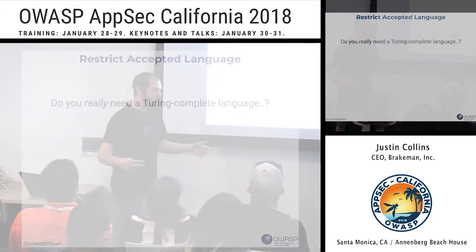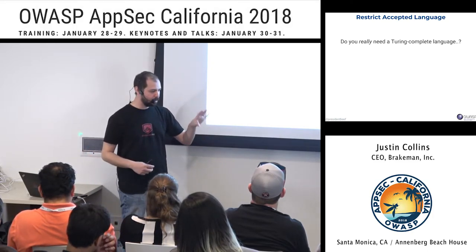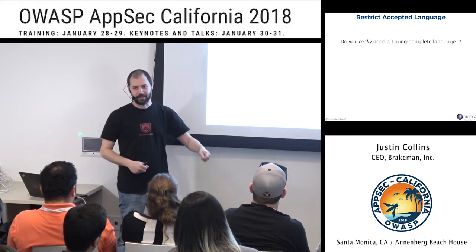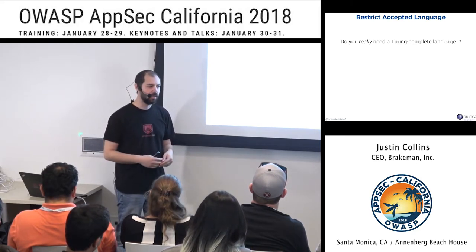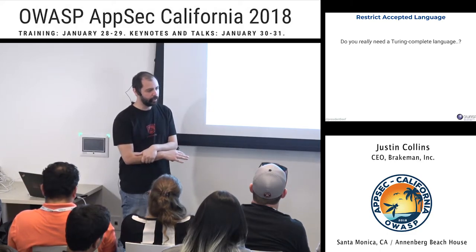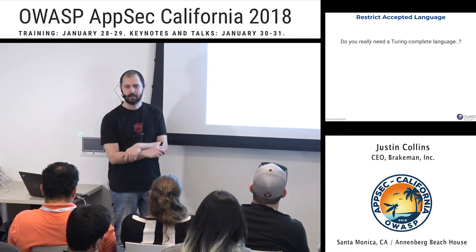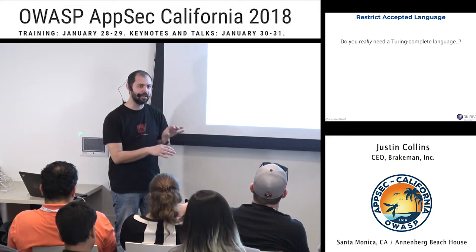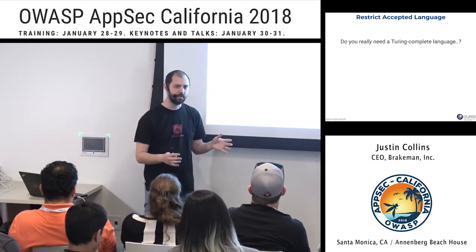When building an interface or library, we generally think 'give the programmer all the power they could possibly need and let them figure out how to use it safely.' Maybe think about it the other way: what do I have to expose and what can I leave out? For example, if you're creating a database library — do you need to allow multiple queries in one call? Many SQL injection payloads rely on getting a semicolon or newline to end the current query and execute a second one. Limiting that reduces impact.